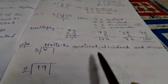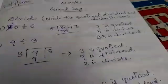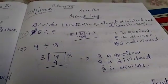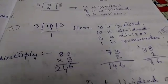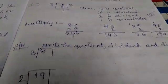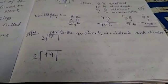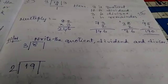Now write the quotient, dividend and divisor. This is your homework: 8 divided by 3, 19 divided by 2. Hope you have understood. Go through it and do your homework.